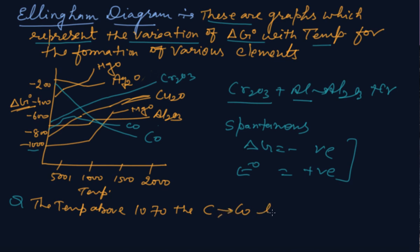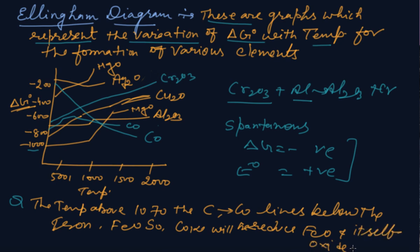Carbon to carbon monoxide - that line is below the iron. Below the iron then FeO, so coke will reduce iron oxide and itself oxidize into the CO.